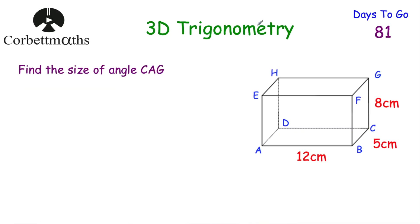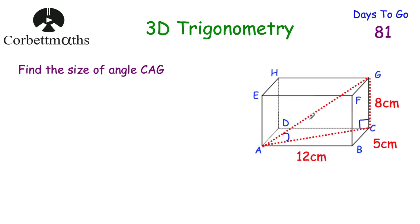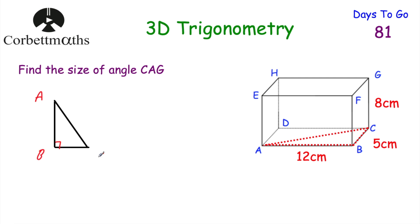We've looked at a 3D Pythagoras question; now let's look at a 3D trigonometry question. We've got a cuboid again and we've been asked to find the size of angle CAG. Let's draw triangle CAG onto the diagram — CA is there and A to G is there, forming a right angle triangle. To find this angle we need another length; if we consider the base of the cuboid as a rectangle and cut diagonally, we get right angle triangle ABC, which we can use Pythagoras on to find AC.